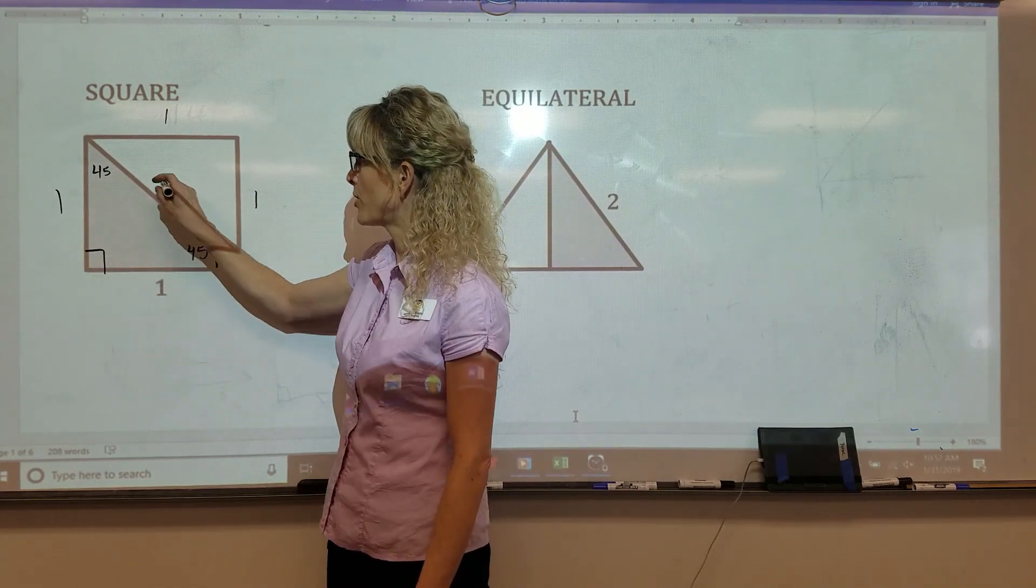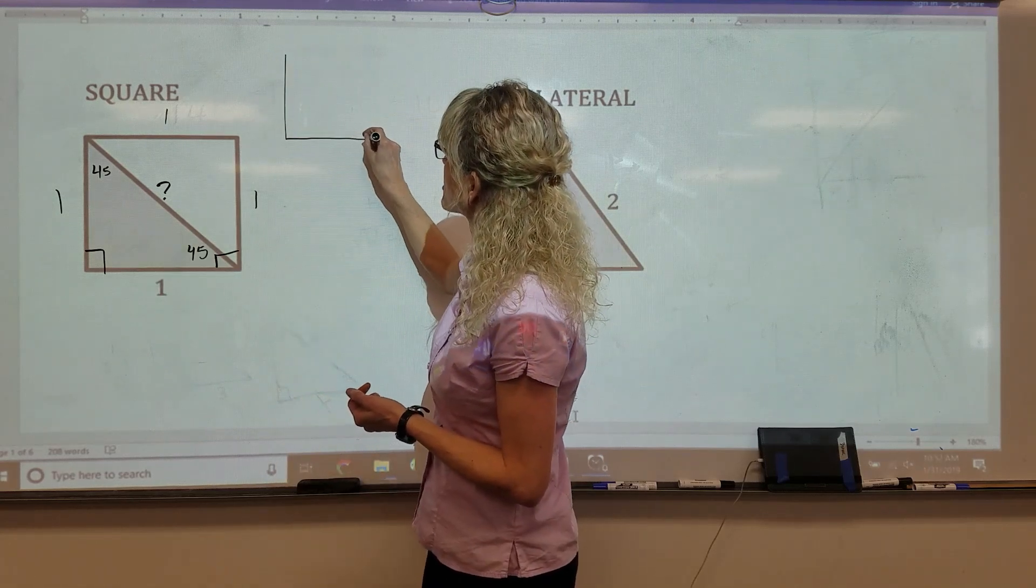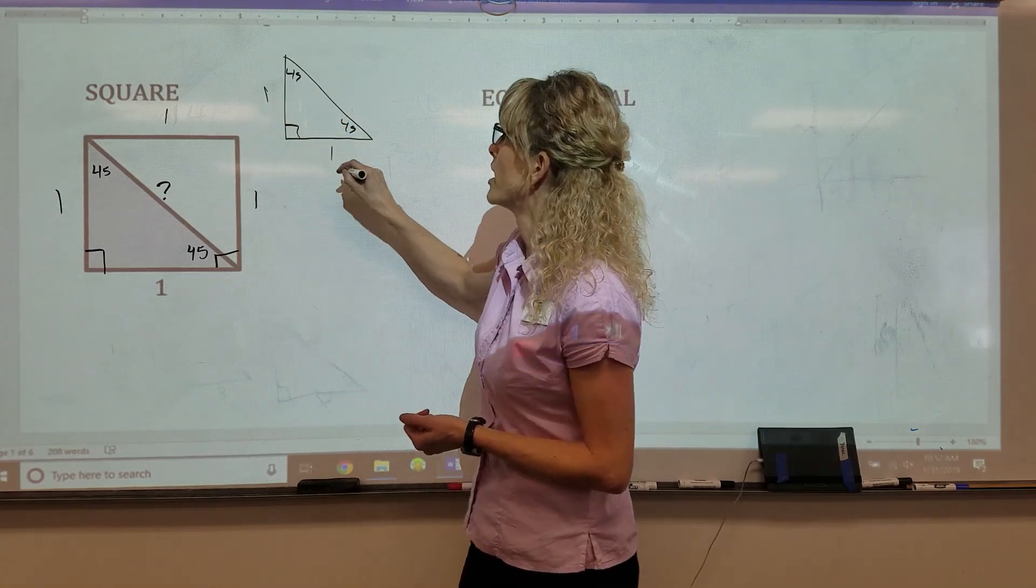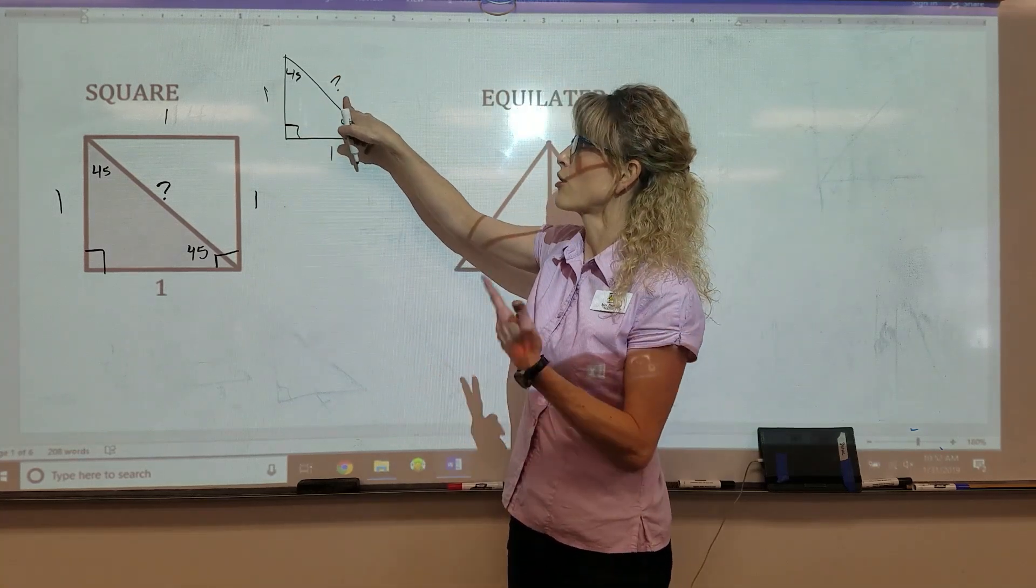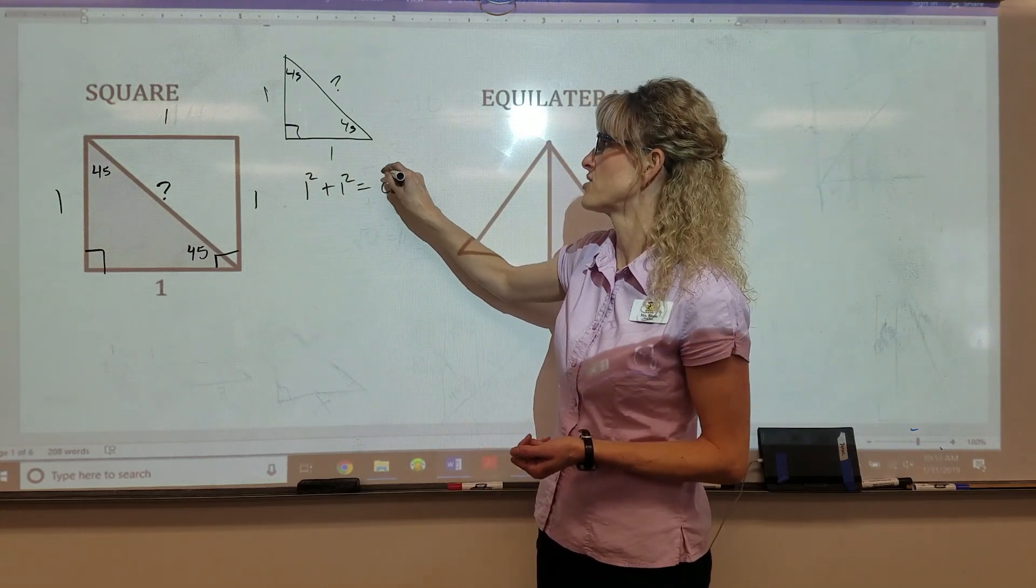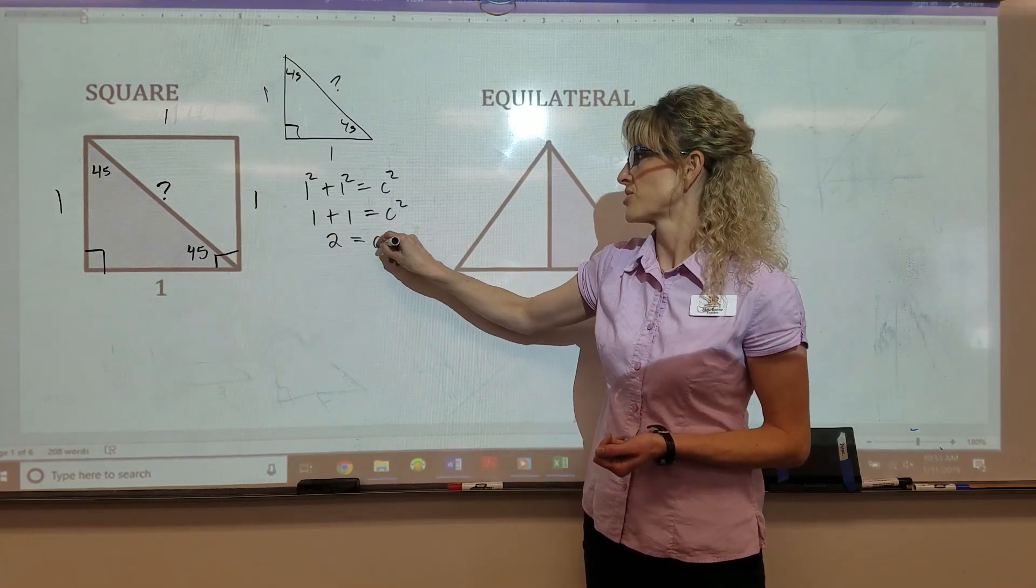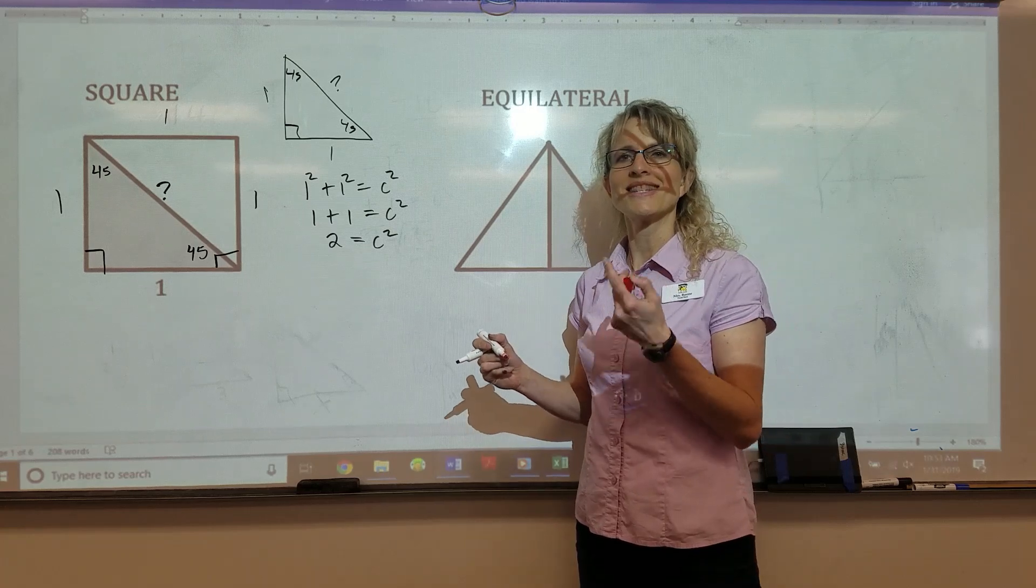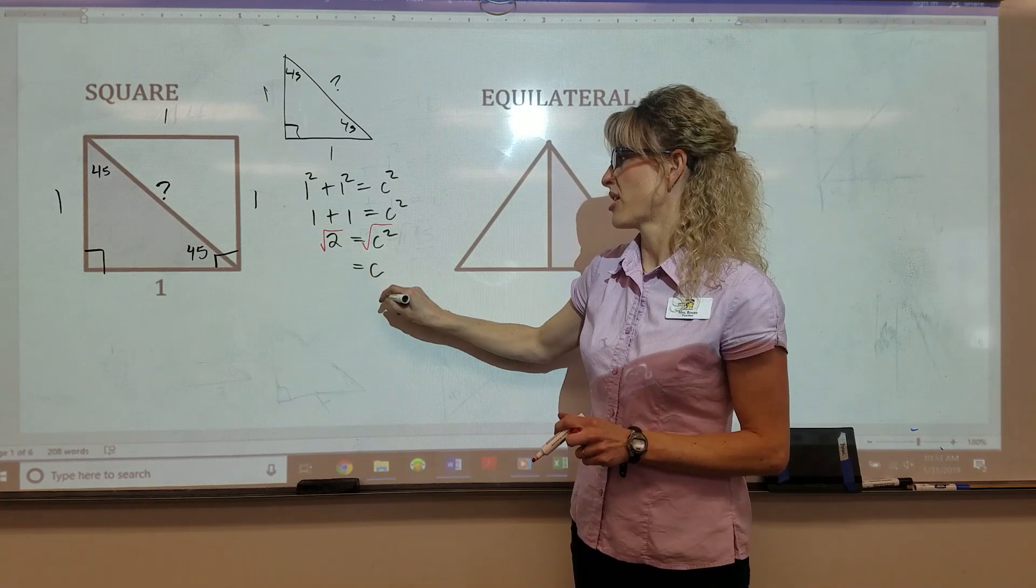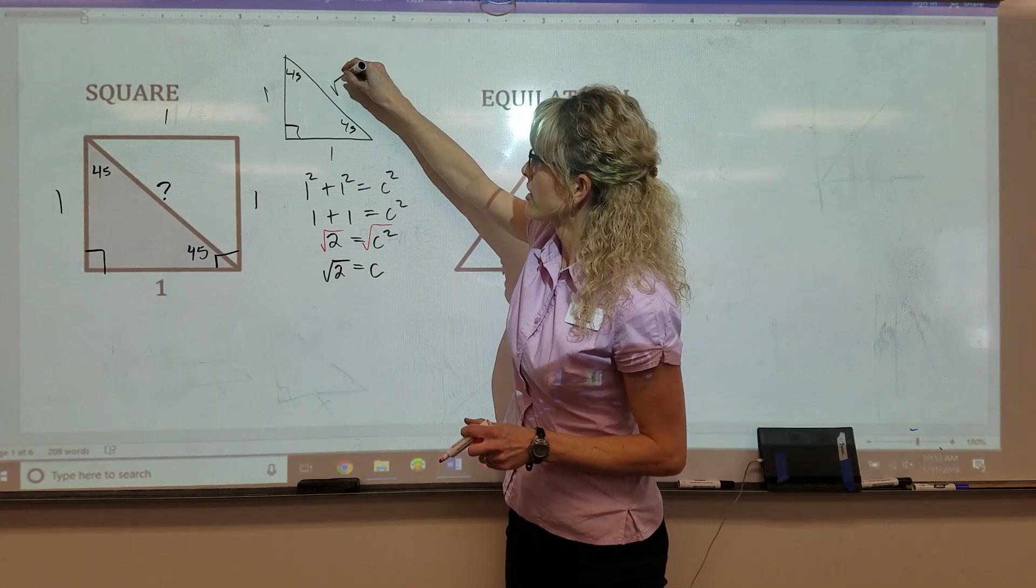45-45-90. My side lengths are 1-1. The question is, what is my hypotenuse of this triangle? So if I were to draw it separate, just to clean it up, I've got 45, 45, 1-1. What is C or my hypotenuse? So we're going to say Pythagorean's Theorem says leg squared plus leg squared equals C squared. 1 squared is 1 plus 1 squared is 1 equals C squared. 1 plus 1 is 2 equals C squared. I don't want C squared. I want C. So I need to square root both sides. I want the principal square root or the positive square root, so that gives me a positive root 2 for the length.